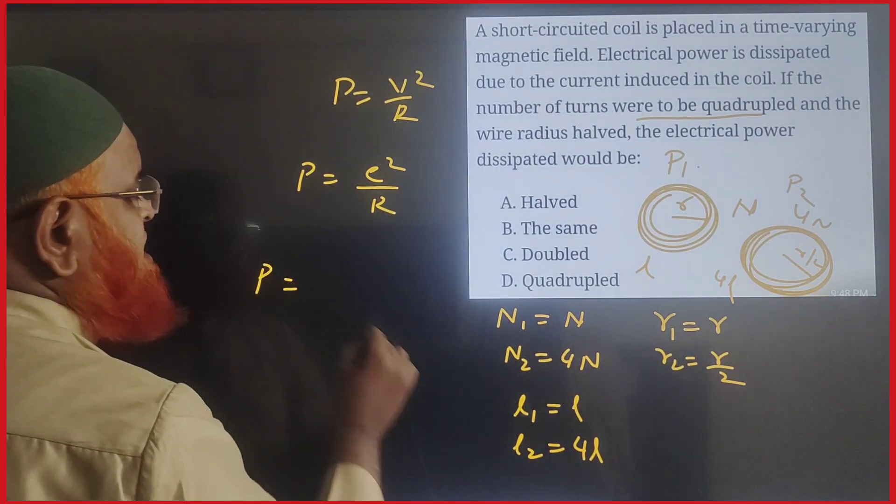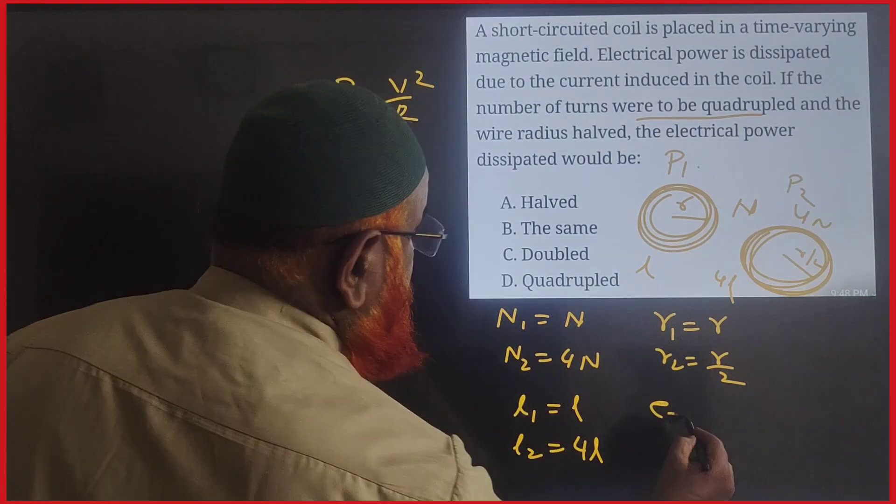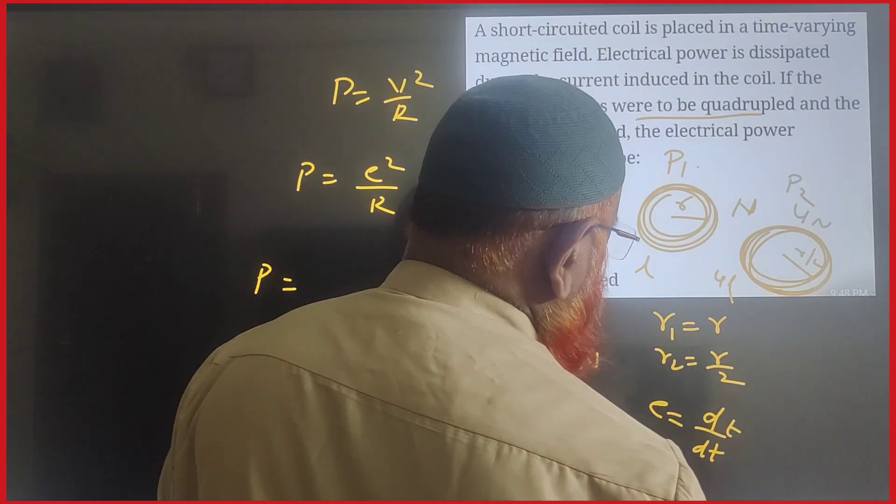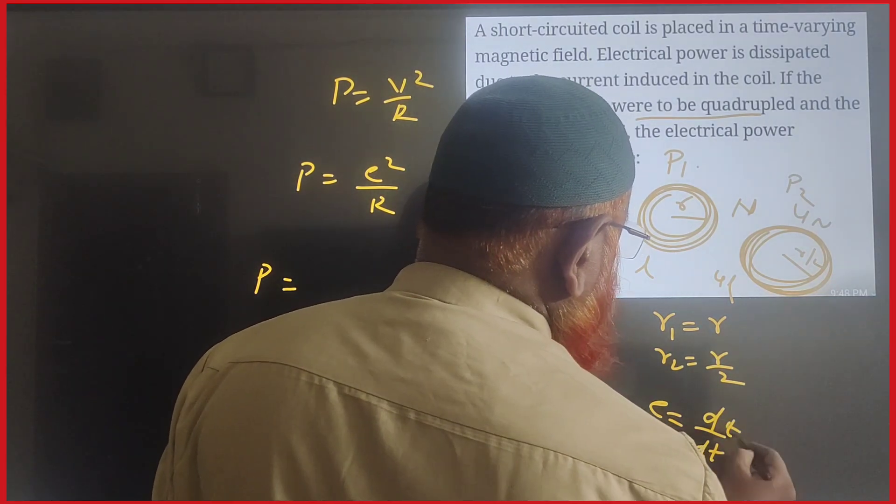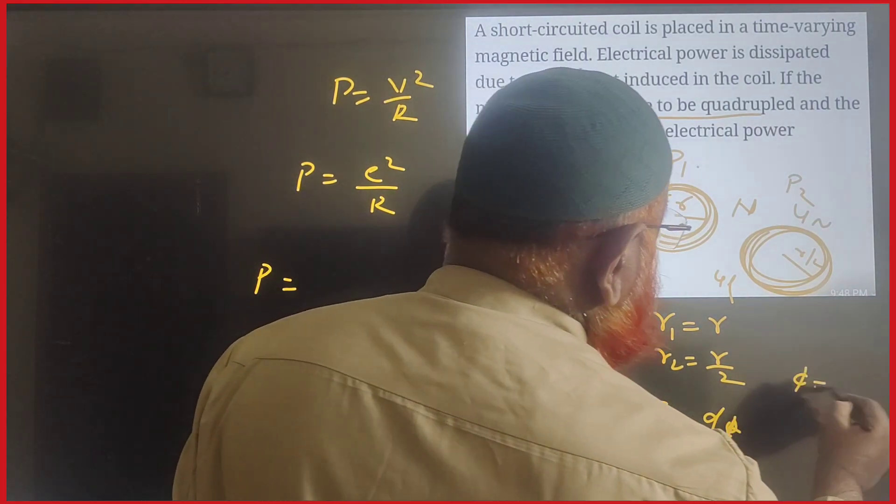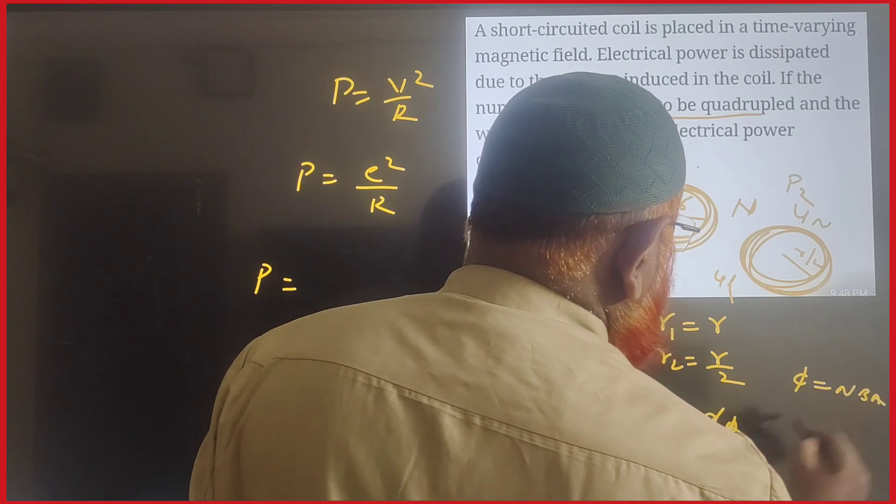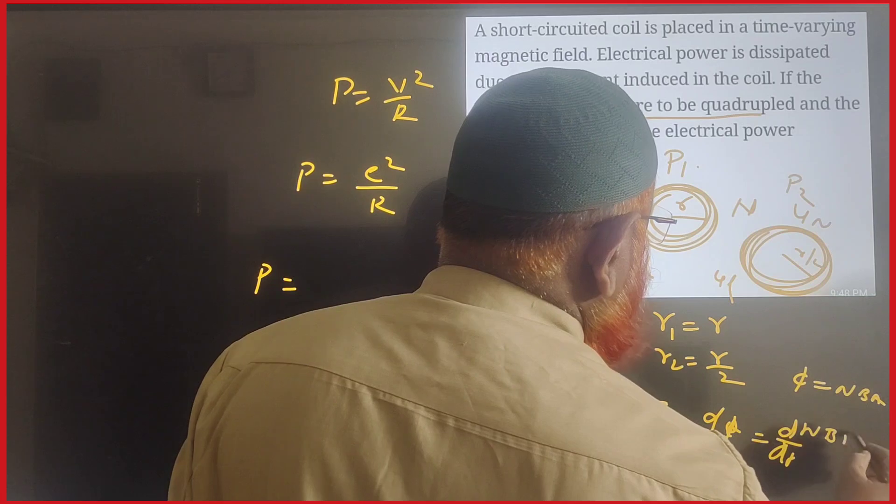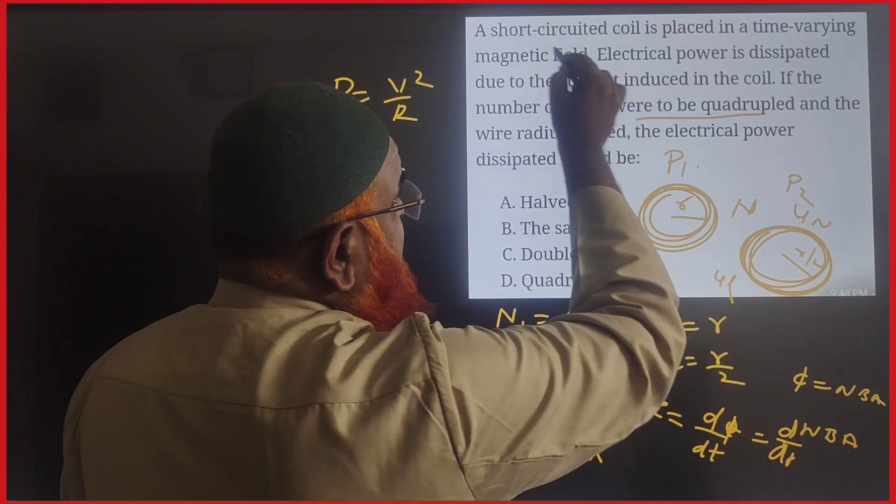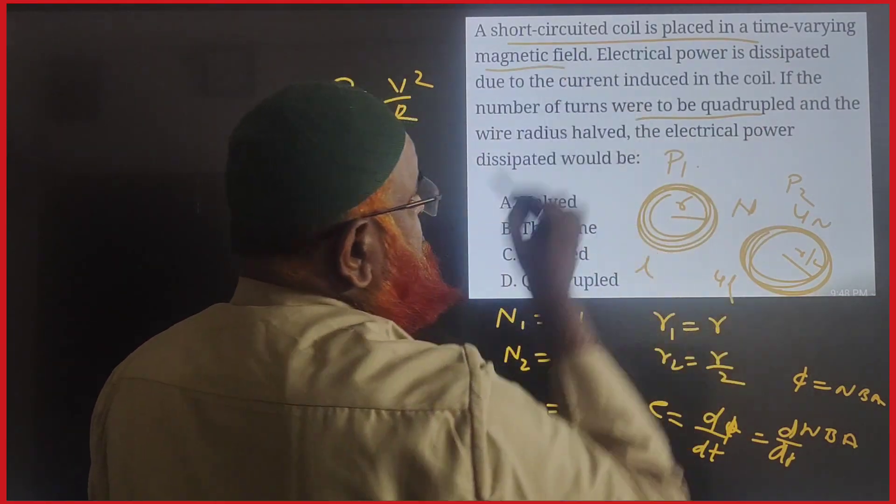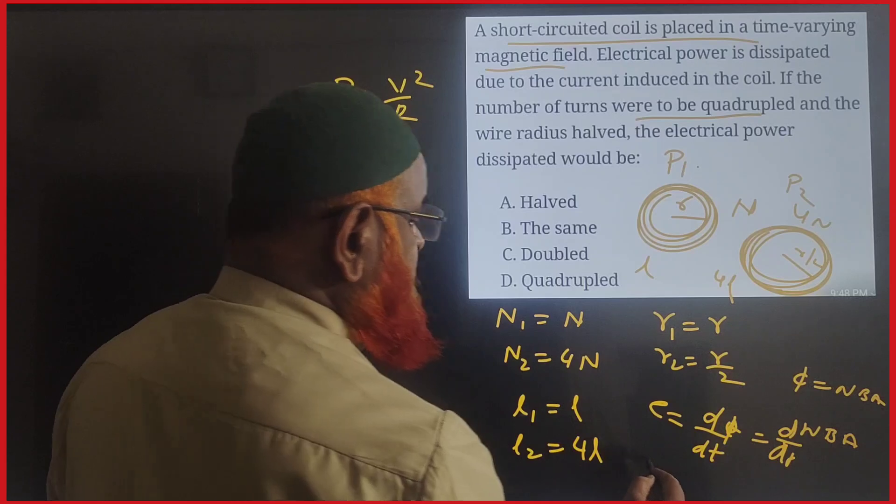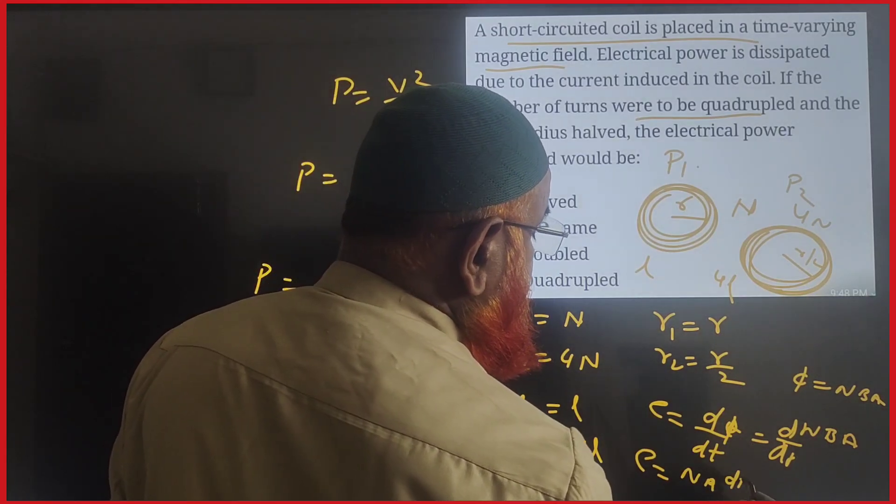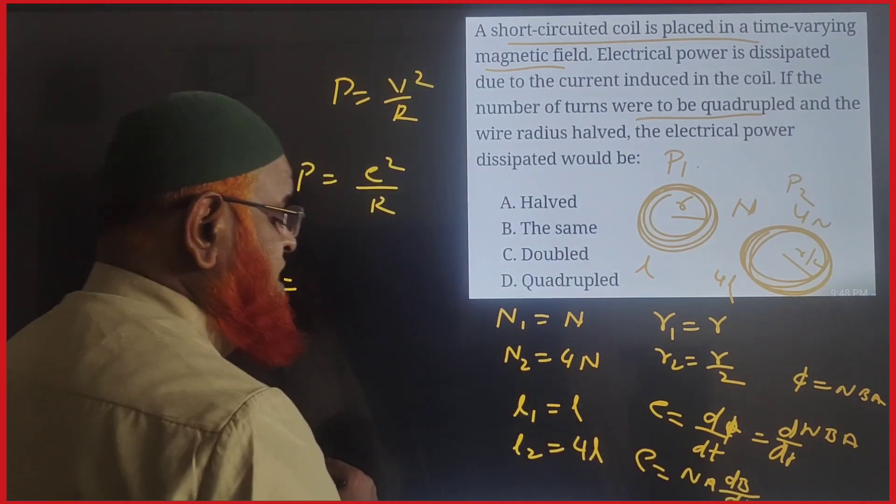E is dφ/dt, where φ is nBA. Therefore we can write E = d/dt(nBA). So B is varying here, the magnetic field is changing. Therefore E can be taken as nA(dB/dt). So we got the value of E.